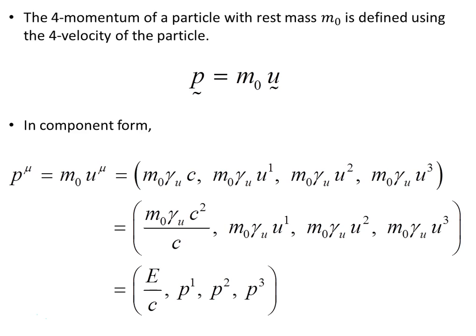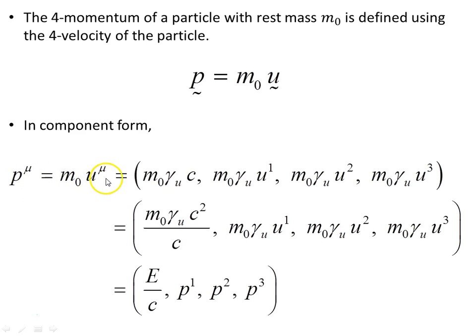The 4-momentum of a particle with rest mass m₀ is defined using the 4-velocity of the particle. We've seen this u in previous videos. In component form, we can write p contravariant superscript mu as m₀u^μ, and here are the components.